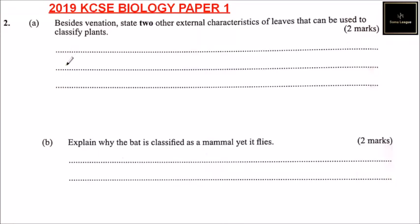This is question number two, part A. Beside venation, state two other external characteristics of leaves that can be used to classify plants. You get two marks. Venation is the arrangement of veins on the leaf. So the other characteristics we can say — one of them is shape of lamina.